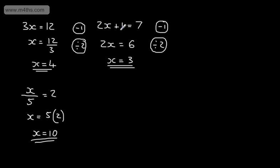So we're undoing the equation. Often when you're taught this in primary school, you work backwards — you write that 7 minus 1 divided by 2 gives x. But I think this balancing method is easier when we have unknowns on both sides.